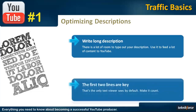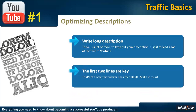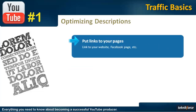The second tip is to make sure that the first two lines of the description are written very well. When you go to the video page, you will notice that only the first two lines of the entire description are shown by default — the rest is hidden until the user clicks on 'show description.' That's why you should make these first two lines count: make them a call to action or grab the viewer's attention so he wants to click on the 'show description' button to see the entire text.